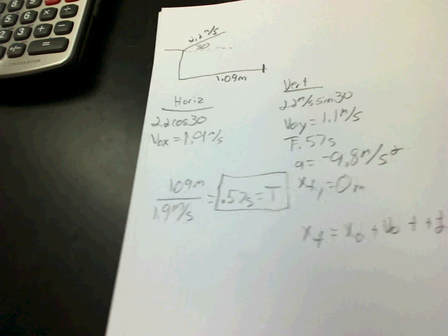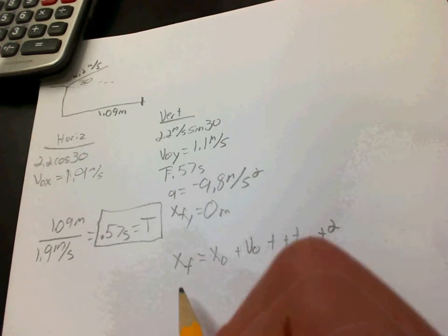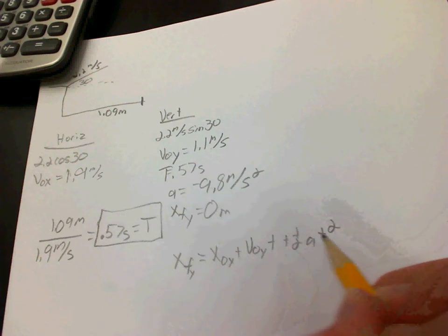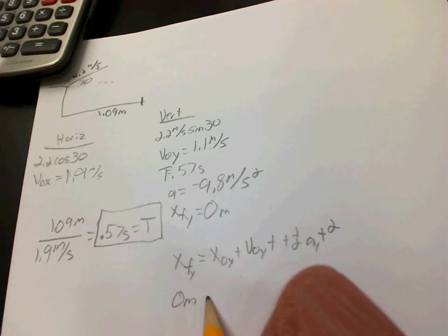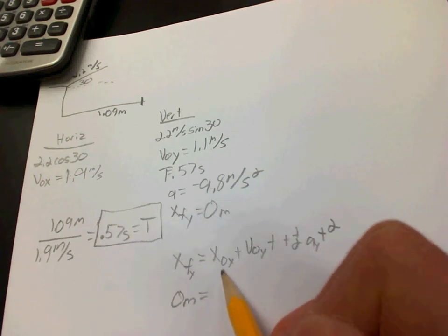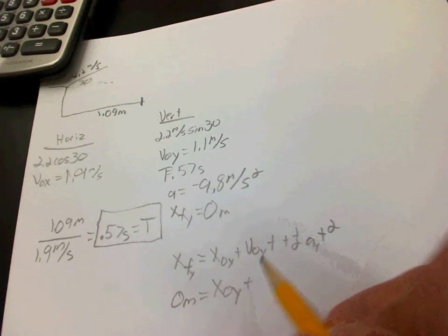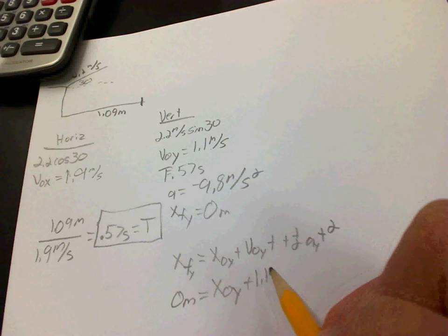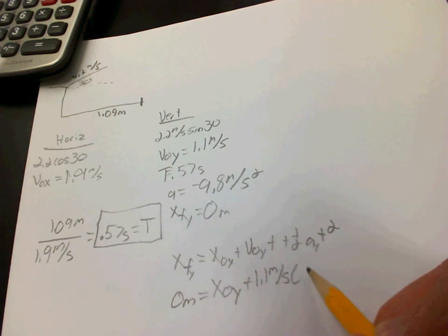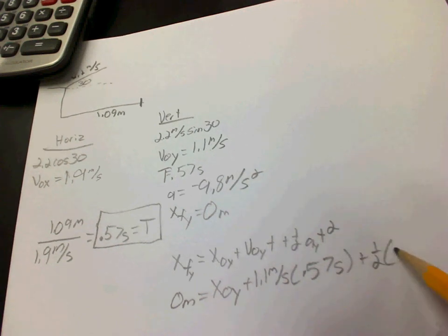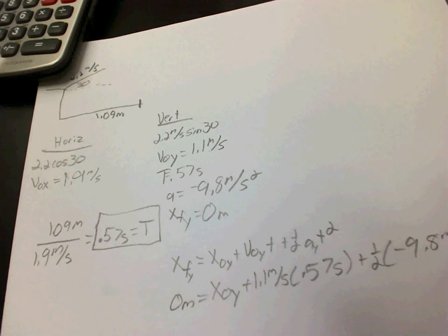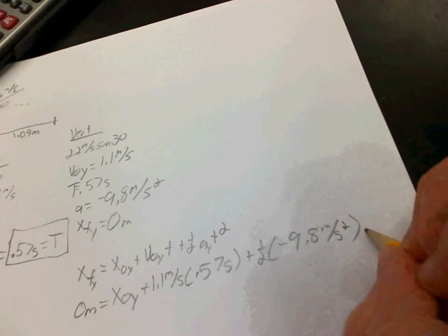And since we're dealing with two different directions, if you want to go back and make sure that you're dealing with your y, just put y's down there just in case you want to keep it all separate. So, as we said, our final position was zero. I'm sorry, our initial position is what we're trying to figure out. We know our initial velocity is 1.1 meter per second. We know our time. We know our acceleration. And again, we know our time. We're going to square it.